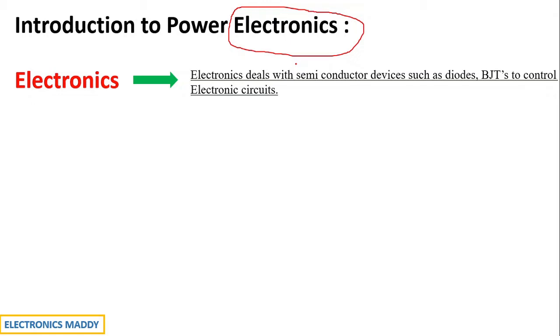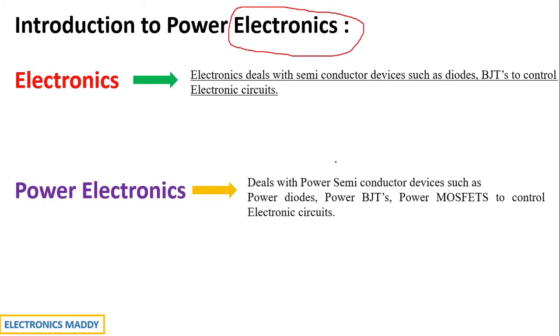Whereas if you talk about power electronics, it deals with power semiconductor devices such as power diodes, power BJTs, and power MOSFETs to control power electronic circuits.